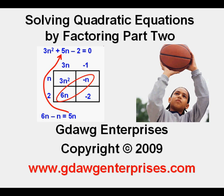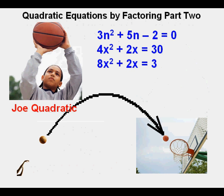Solving Quadratic Equations by Factoring, Part 2. In Part 1, Joe introduced the box method for factoring quadratic equations in the form ax squared plus bx plus c equals 0, when a, the coefficient of x squared, is 1. In this lesson, quadratic equations where the coefficient of the quadratic term is not 1 will be solved, such as those with coefficients of 3, 4, and 8. These problems rise to another level of complexity.